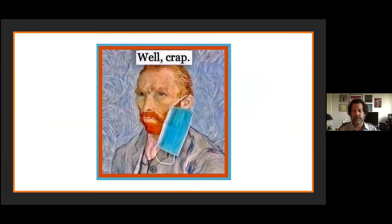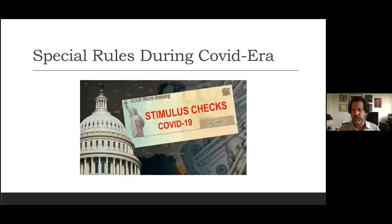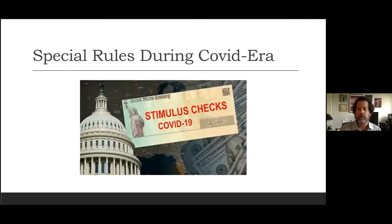Now, COVID and taxes. Stimulus checks during COVID are not taxable—they're special rules. If you haven't received yours because the IRS didn't have your correct address or you didn't have direct deposit set up, you can go on the website and correct that, or file for your missing stimulus checks on your 2020 tax return. If you didn't get your $1,400 payment yet, go correct your information now. Otherwise, you'll have to wait until you file your 2021 return to claim it—and everybody would rather have their money now.